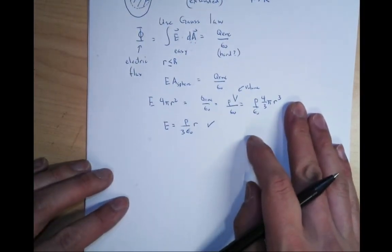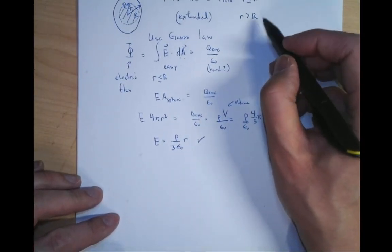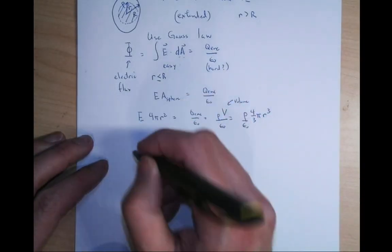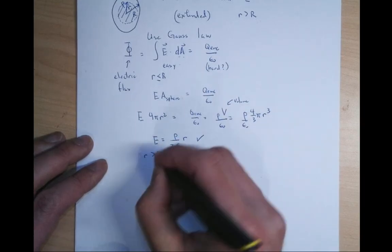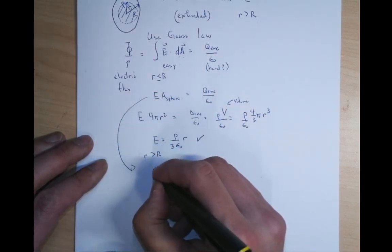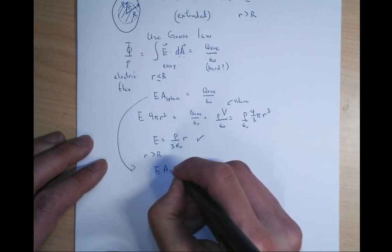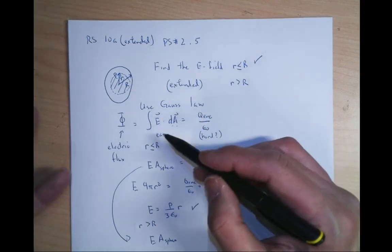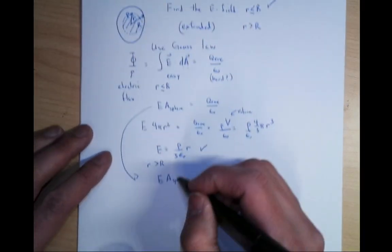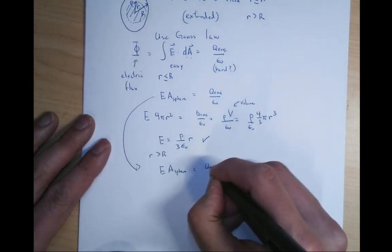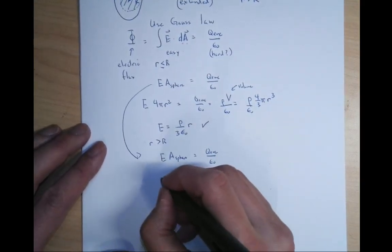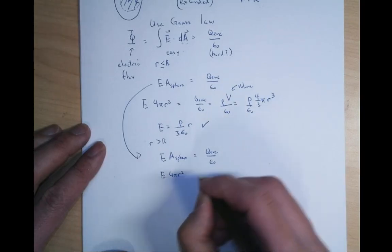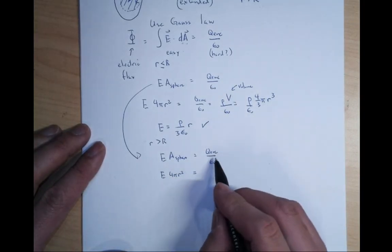Now let's do the r greater than R case. It's the same thing again — E times the area of the sphere — because the same argument applies: it's round, you spin it around, the E field is radial. So E times 4πr² equals Q enclosed over epsilon naught. Now this piece is interesting. The Gaussian surface is now outside the sphere, so r is bigger than R.